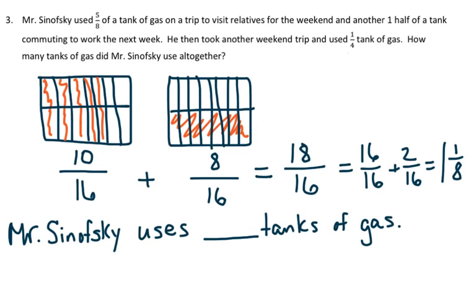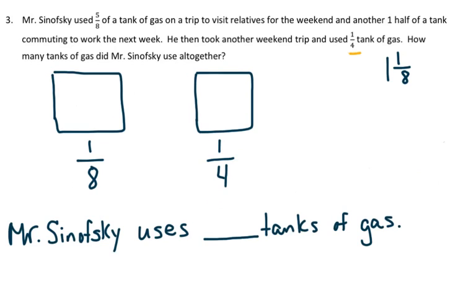Now we have the answer of one and one-eighth. We're going to add the one-fourth of a tank of gas he used on his weekend trip. I wrote my original answer from five-eighths plus one-half over here — it's one and one-eighth. I'm only going to use the one-eighth for the next step, plus one-fourth, and just remember that I have to add the one — I already have one tank of gas he used.